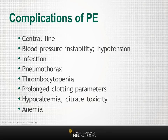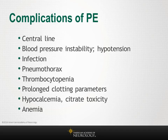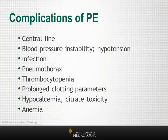Plasma exchange requires a large double-lumen catheter, usually via a central line, though some centers can use peripheral access. Potential complications include blood pressure instability or hypotension — a real problem in patients with severe dysautonomia — as well as infection, pneumothorax, thrombocytopenia, anemia, prolonged clotting parameters, hypocalcemia, and citrate toxicity. Labs are typically monitored daily, and plasma exchange is held if clotting parameters are not optimal.